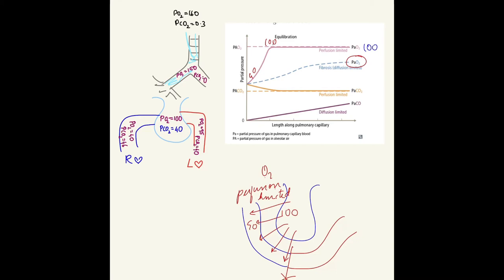So the partial pressure of oxygen is reduced in the capillaries. Because of this, decreased oxygen goes to systemic circulation and can result in hypoxemia.